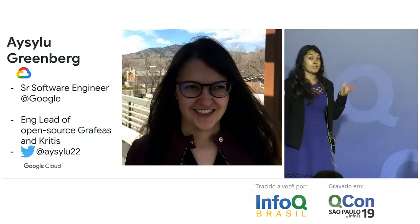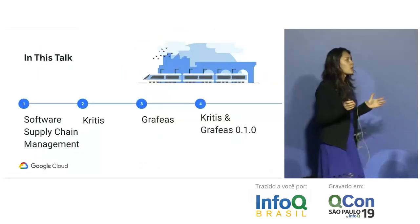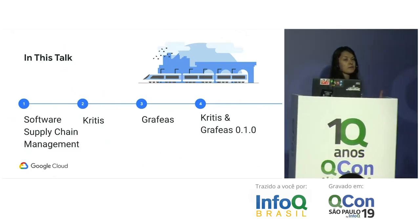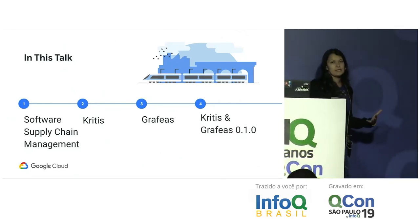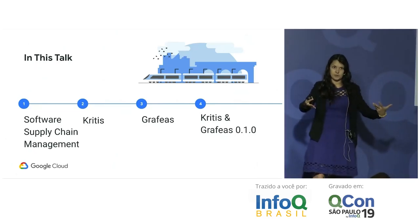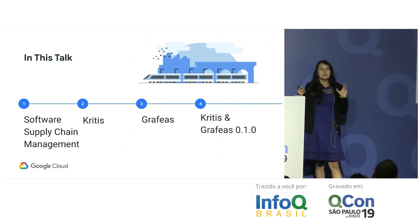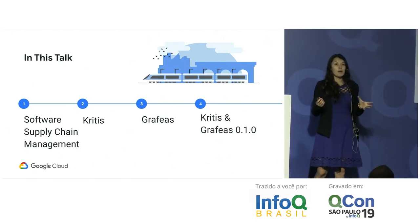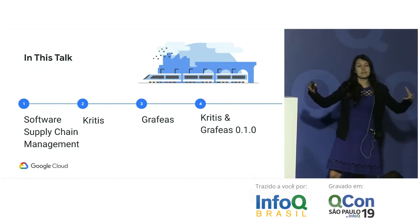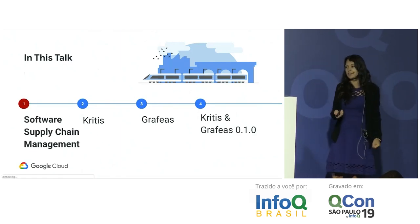I'm the tech lead of the two open source projects we'll talk about today: Grafeas and Kritis. You can find me on Twitter at isalute22 — and 22 is not my age. Today's talk has four parts: software supply chain management, Grafeas and Kritis, the upcoming release 0.1.0, and the future of the project.